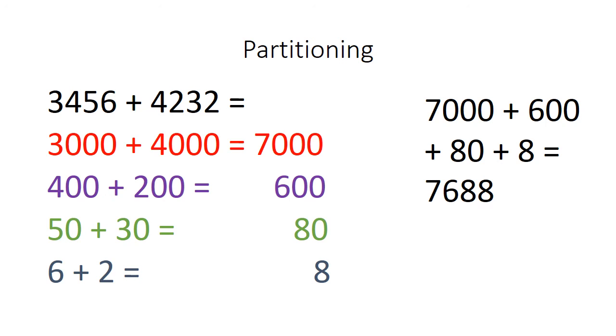I now have four separate answers. The answer to the thousands added together, the answer to the hundreds added together, the answer to the tens added together, and the answer to the ones added together. All I need to do to finish this strategy is add those four answers to give me my final total. 7000 add 600, add 80, add 8 gives me 7688.